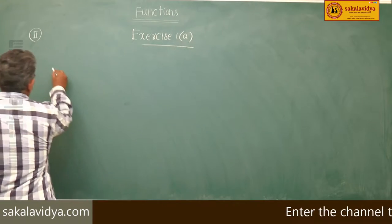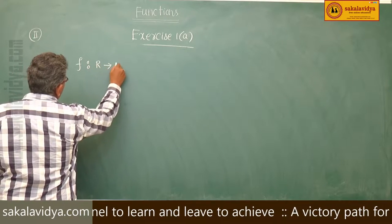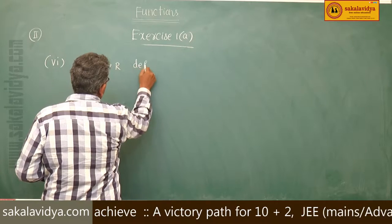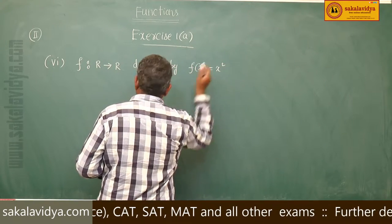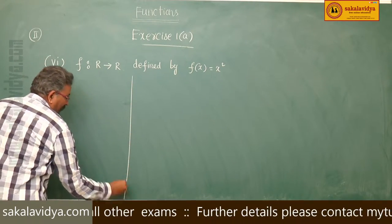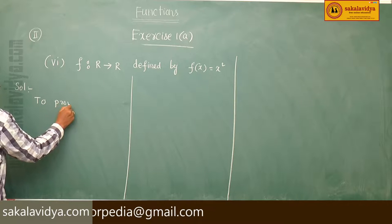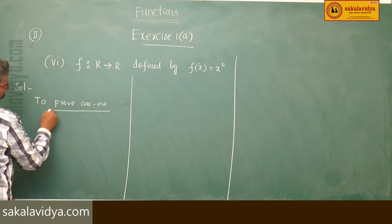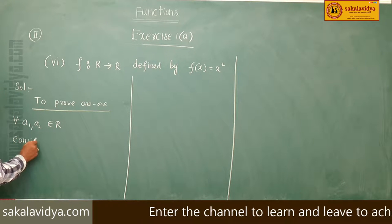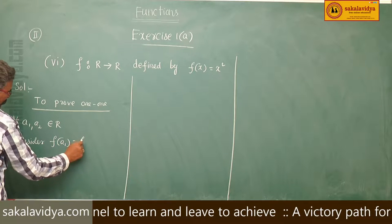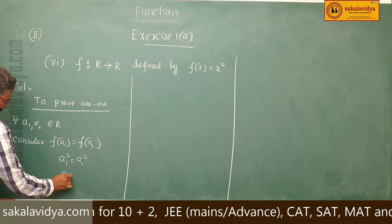6th problem: F maps R to R defined by f(x) = x². To prove it is 1-to-1, for every a1, a2 belonging to R, consider f(a1) = f(a2). Then a1² = a2², which gives a1 = ±a2.